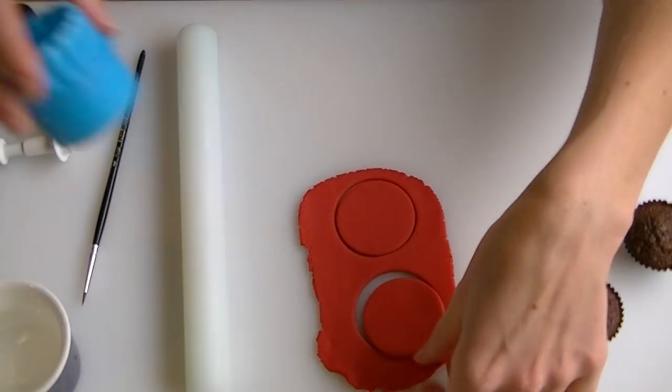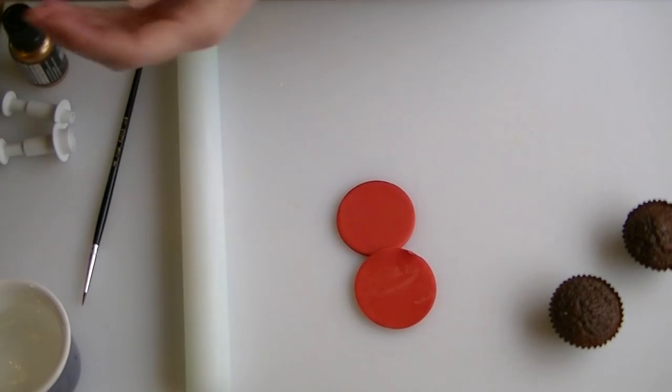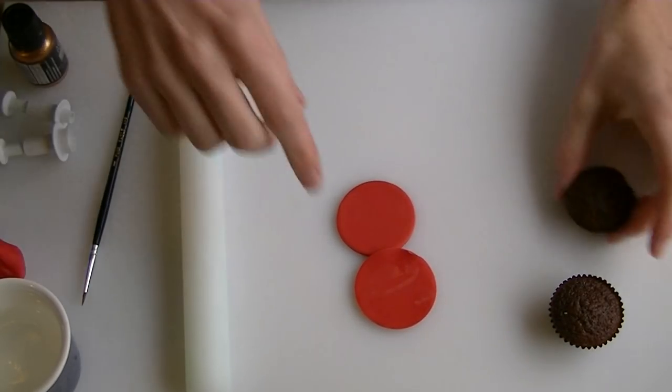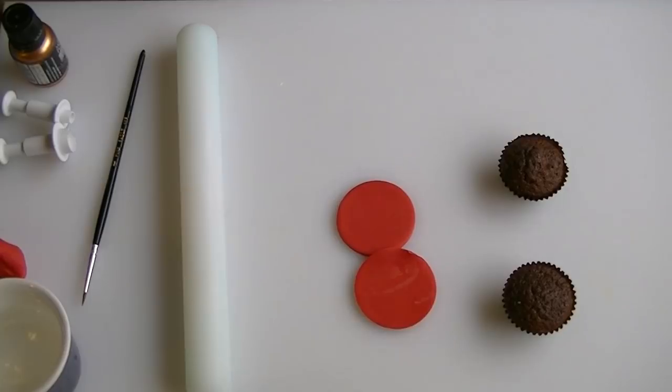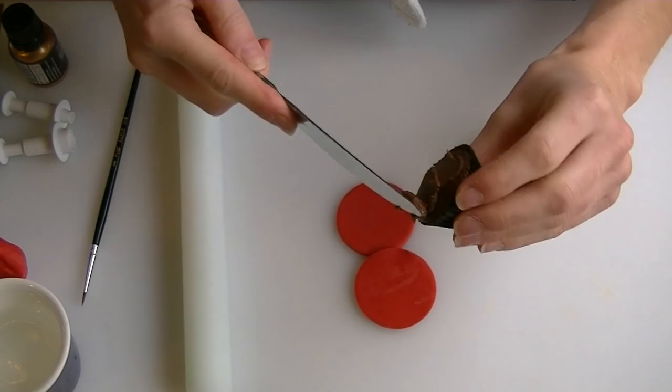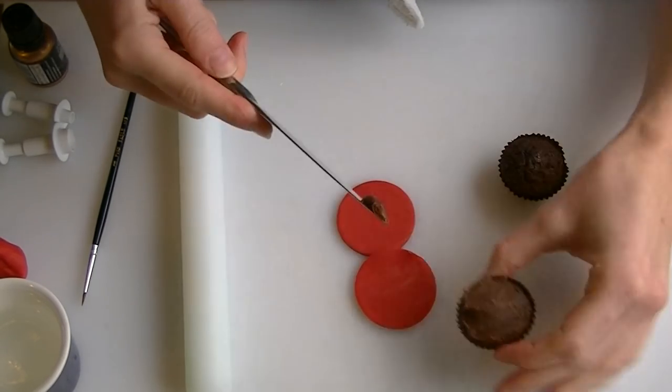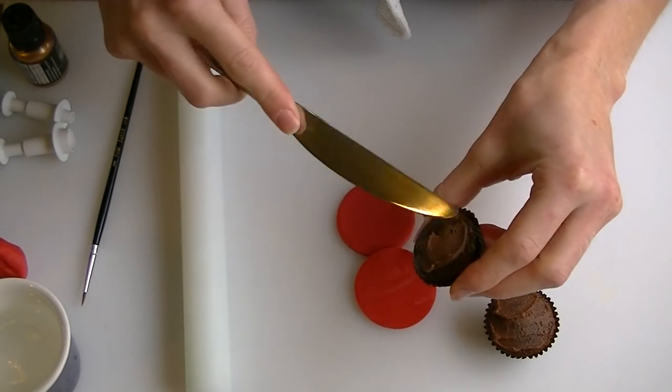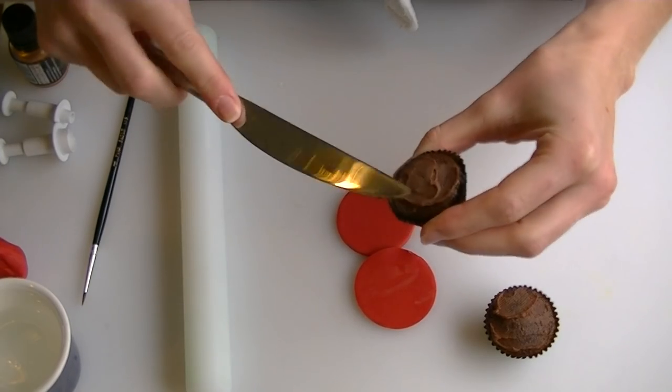So I'll cut two out and I'm just going to stick them on with a little bit of buttercream. I've got some chocolate buttercream. You don't want very much on, otherwise when we put the icing on it will just squeeze out the sides.